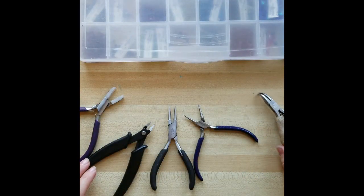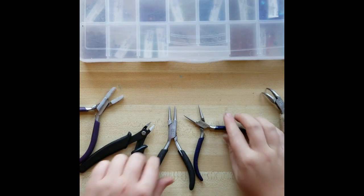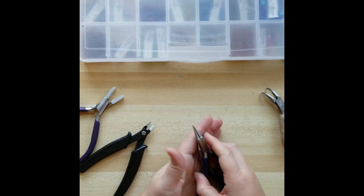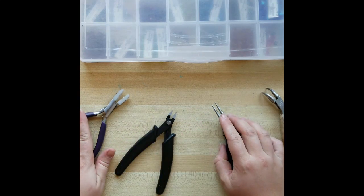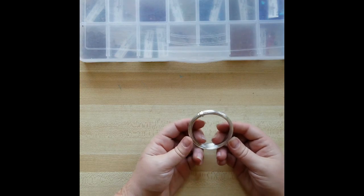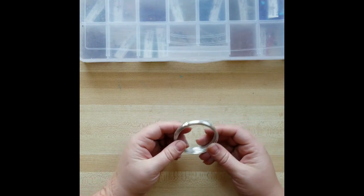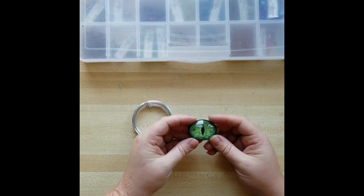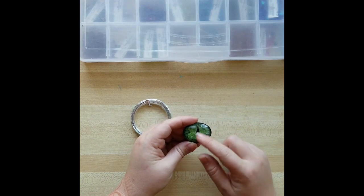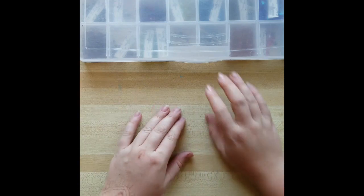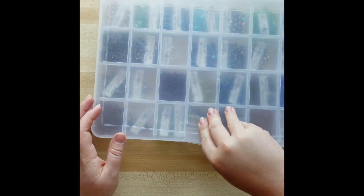So here I have a pair of bent nose pliers, a fine point and regular pair of round nose pliers, some flush cutters and some nylon jaw pliers. There's links for all of these down in the video description below if you'd like to buy your own.